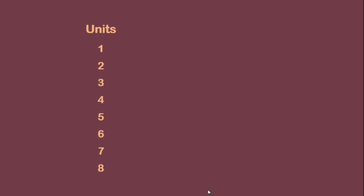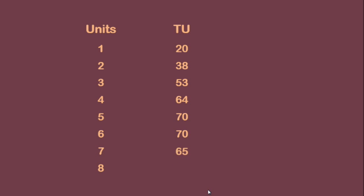Total utility increases up to the sixth unit. After that, it falls. Marginal utility falls continuously.